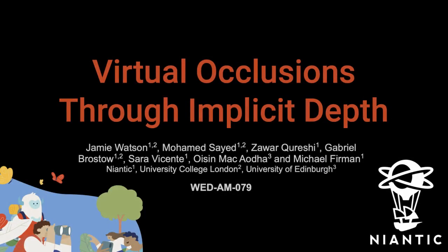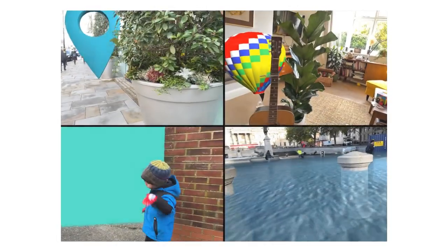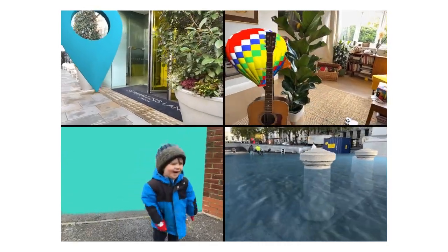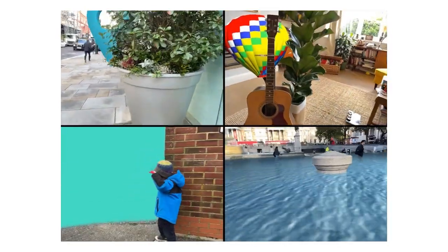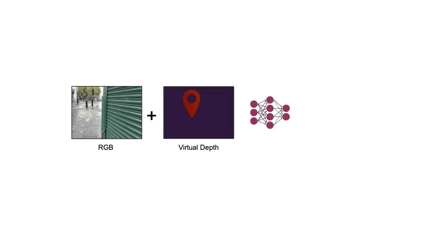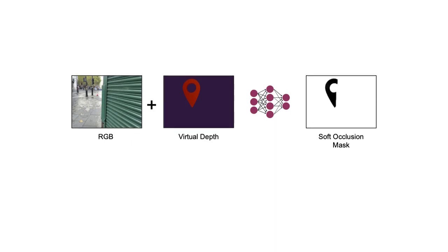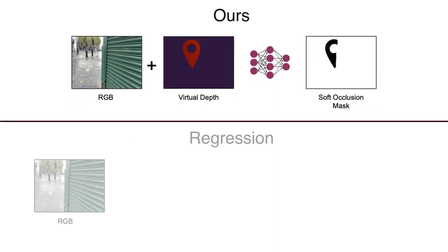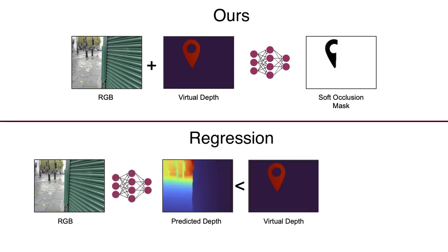We introduce virtual occlusions through implicit depth, a new approach for accurately estimating scene occlusions for augmented reality applications. The goal is to create convincing and compelling AR effects by inserting virtual objects into images and videos such that they are accurately occluded by real-world objects. We frame the task as a binary segmentation problem and directly predict an occlusion mask, taking as input RGB images and a rendered depth map of virtual assets in the current camera. This contrasts with conventional approaches where a full depth map is estimated and compared pixel-wise with the known depth of the virtual asset.